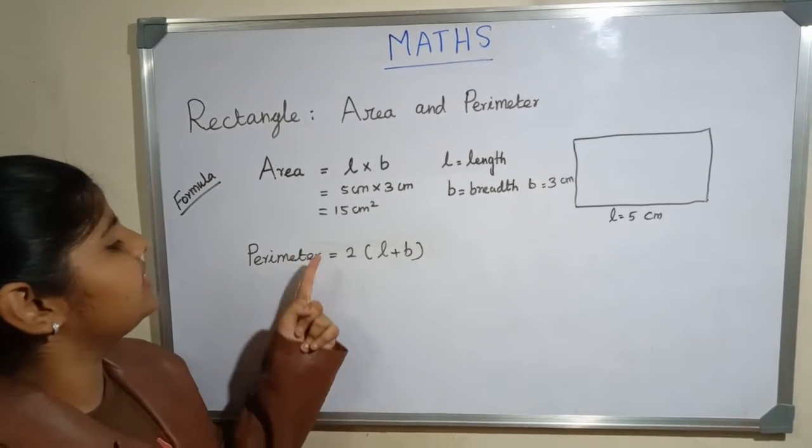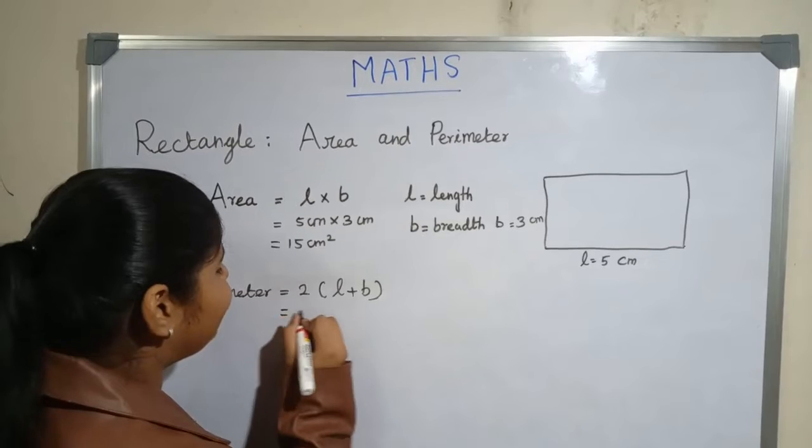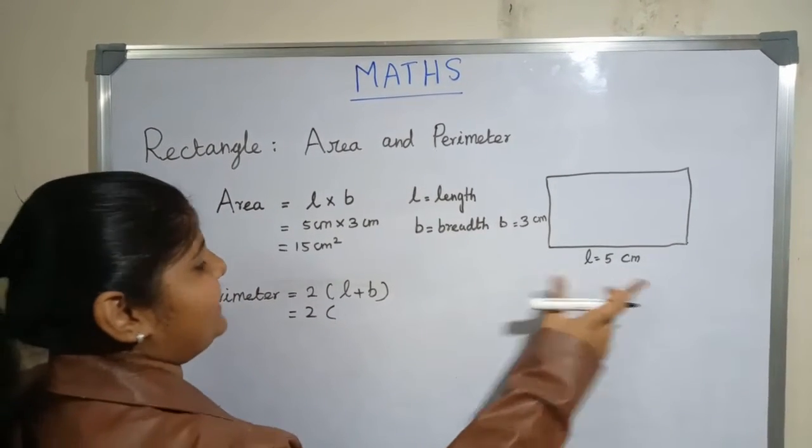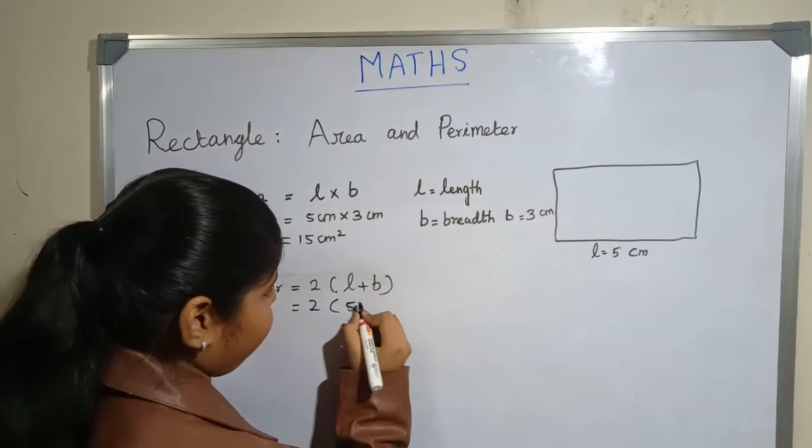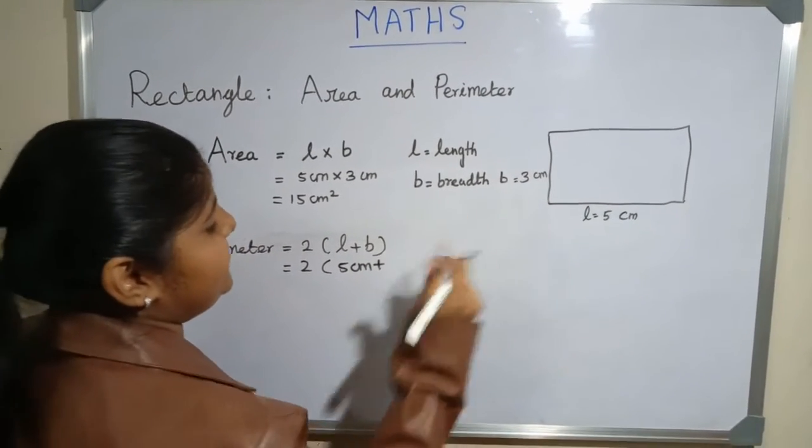The formula for perimeter of a rectangle is 2 times (l + b). So 2 times length, which is 5 centimeters, plus breadth, which is 3 centimeters.